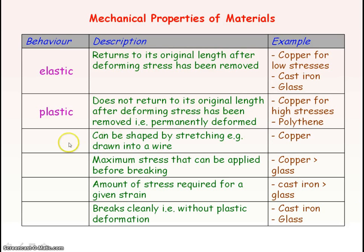A material that can be shaped by stretching — for example, being drawn into a wire like copper — is a ductile material. Ductile materials have large plastic regions, so a ductile material must be plastic because there is a permanent change in shape by stretching.